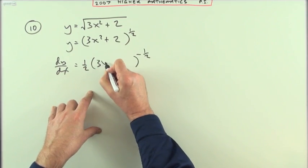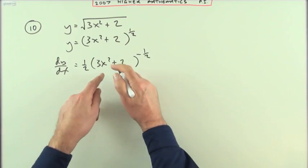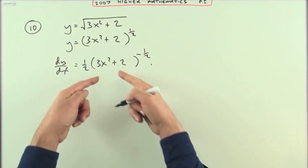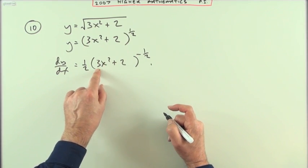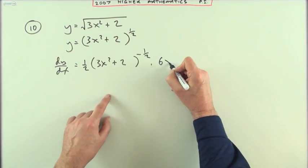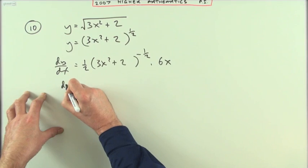Have a look inside. It was 3x squared plus 2. Multiply that by the derivative of the inner function. The inner function's got a derivative of multiply by the power 6x, and that part disappears, and then just tidy that up.